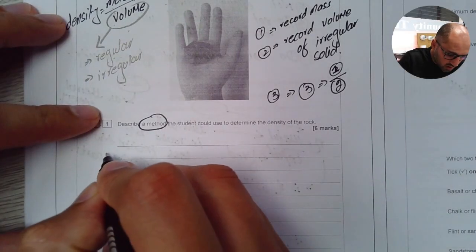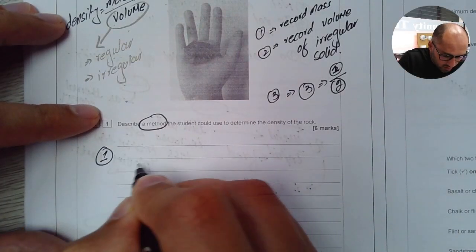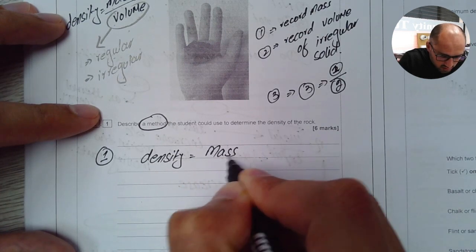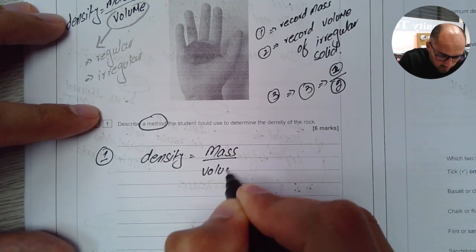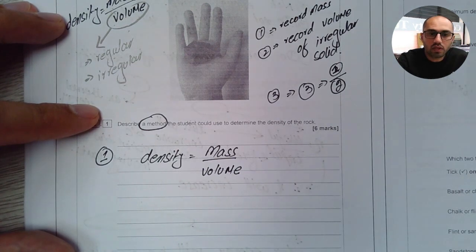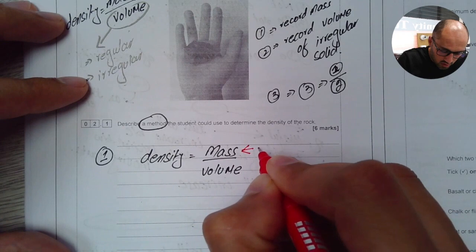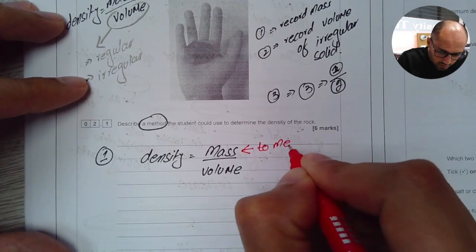I'll start with number one. I'll say my density is equal to the mass divided by the volume. Now this equation will guide me what I need to do. So I'll say mass. To measure it, I'll use balance.